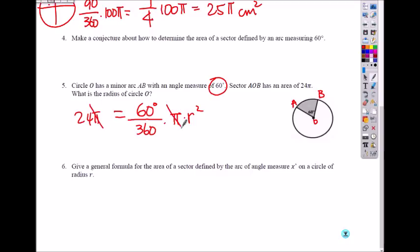The area of the whole circle. And here, you're looking for the radius. So what would you do? Divide by pi on both sides, and simplify this fraction. What is 60 divided by 360? One-sixth times pi r squared.